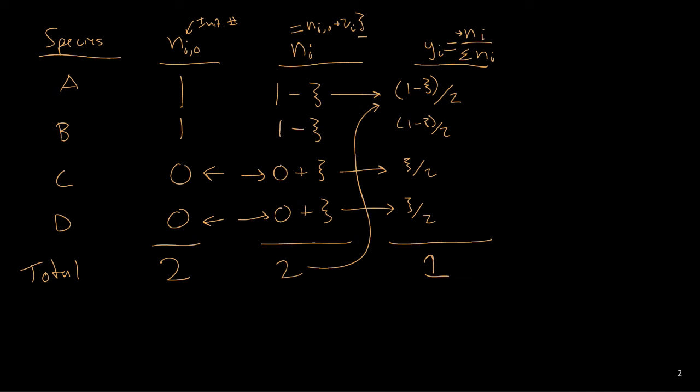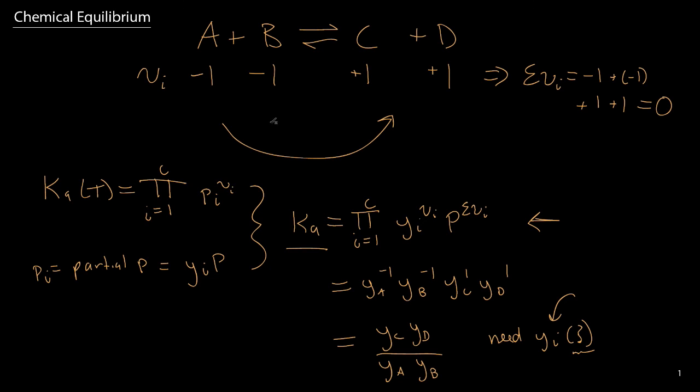If we were to change the chemical reaction and go back to our initial example here, what we would be doing is changing the individual stoichiometric coefficients. But the same algorithm would apply to construct the table and get everything simplified down to a relationship of only the mole fractions, and we can still reduce this down to one equation and one unknown.